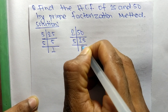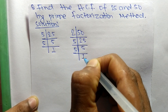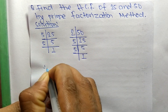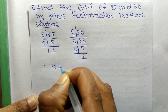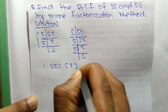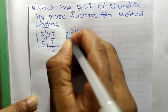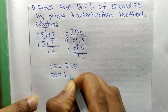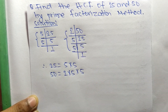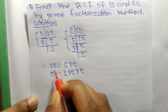Continuing with 50: 5 times 5 equals 25, and 5 times 1 equals 5. So from these prime factors we can write: 25 is equal to 5 times 5, and 50 is equal to 2 times 5 times 5. Now we find out the common factors in the prime factors of 25 and 50.